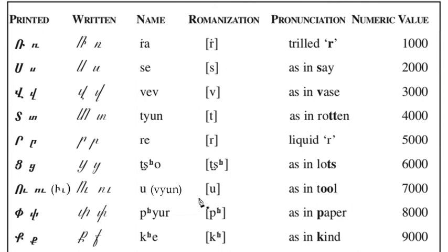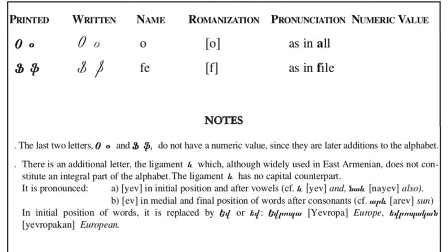In the parentheses, we have a different pronunciation from classical Armenian: VYUN. PURE – P, KE – K. And we also have O – O, FE – F.